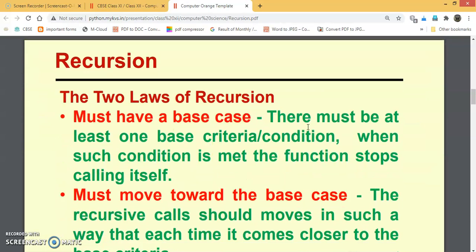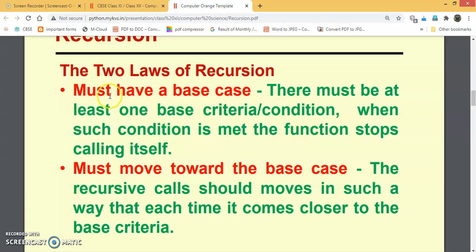There will be two laws of recursion. Basically, must have a base case. There must be at least one base criteria condition. When such condition is met, the function stops calling itself.